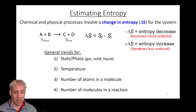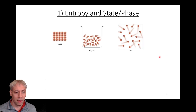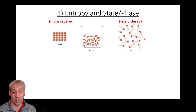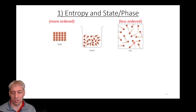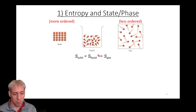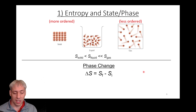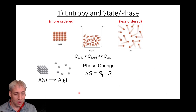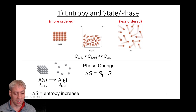The general trends we'll describe are for state and phase, temperature, number of atoms in a molecule, and number of molecules in a reaction. For entropy and state: comparing solids, liquids, and gases — gases are typically going to be less ordered. Crystalline solids have a very particular order, liquids are less ordered, and gases are even less ordered — they'll occupy whatever volume they can. So solids have the lowest entropy, liquids will be higher, and gases will be much higher. When talking about a phase change, if you go from a solid to a gas, you're increasing the disorder of the system — this gives a very positive ΔS and is entropically favorable.